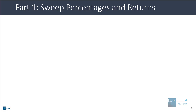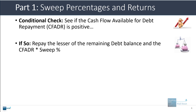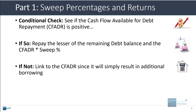Let's go into the first topic: sweep percentages and how they affect returns to both lenders and the private equity firm. The basic idea is that if you want to add a sweep to a simple LBO model, you first check if the cash flow available for debt repayment is positive. If it is, you repay the lesser of the remaining debt balance and the cash flow available times the sweep percentage. If it's negative, you simply link to the cash flow available because you need to borrow extra.